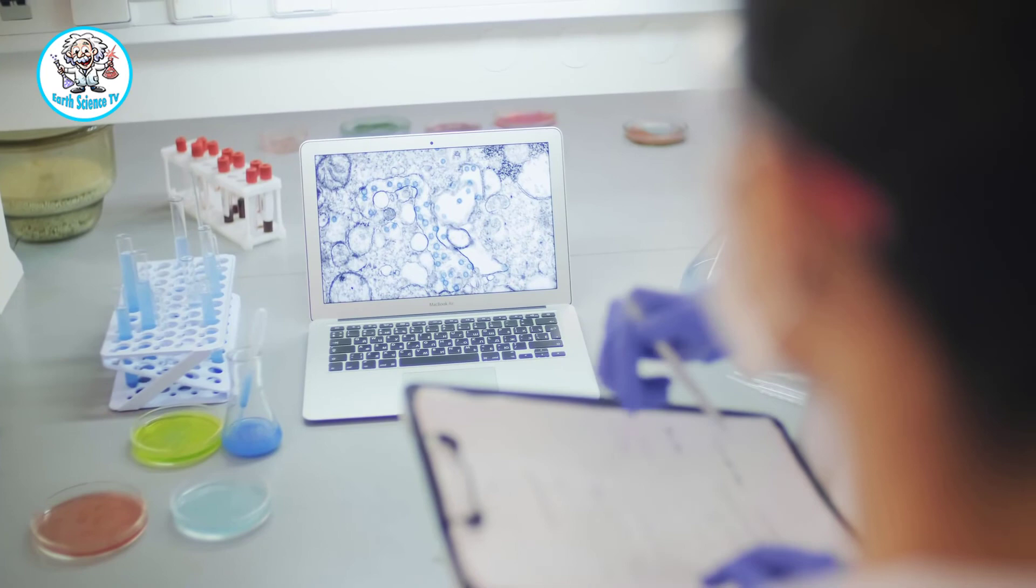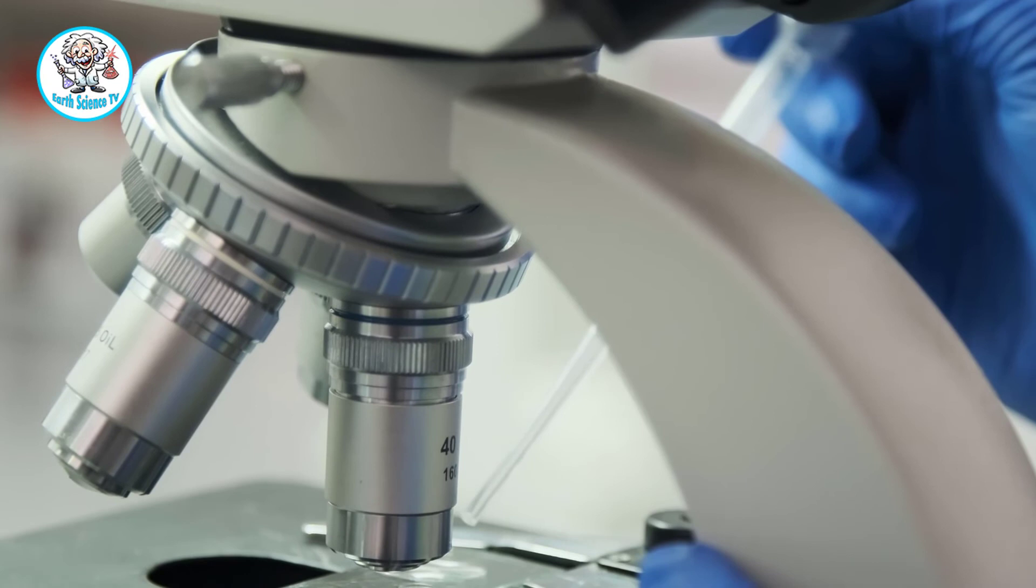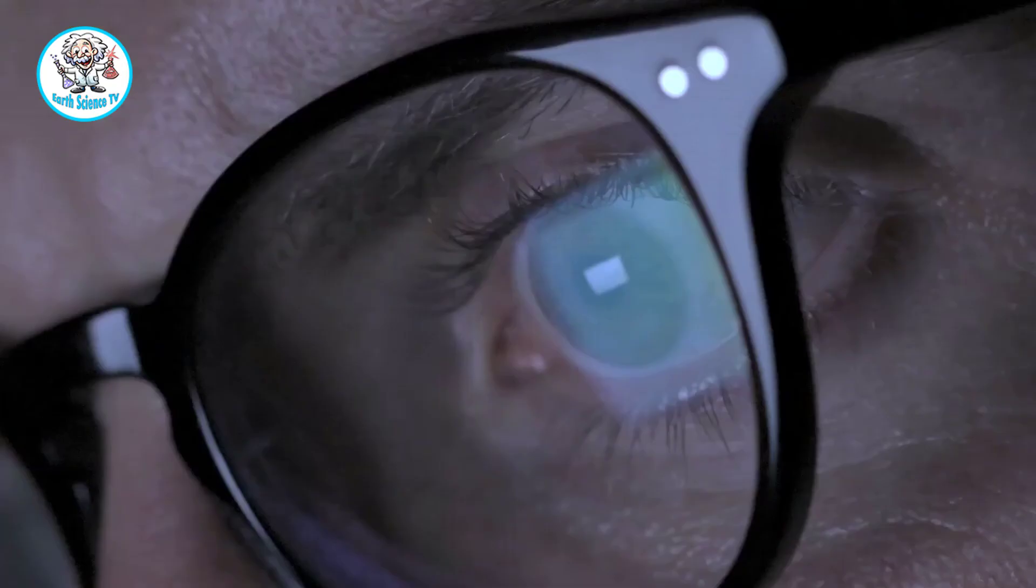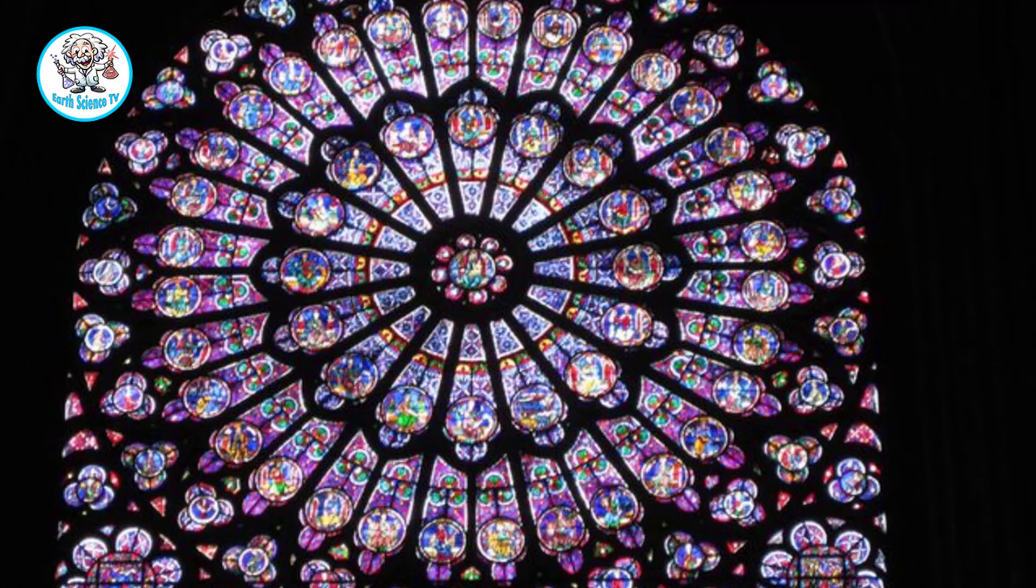Since the researchers couldn't put liquid into the precious artifact itself, they instead imprinted billions of tiny wells onto a plastic plate about the size of a postage stamp and sprayed the wells with gold or silver nanoparticles, essentially creating an array with billions of ultra-miniature Lycurgus cups.